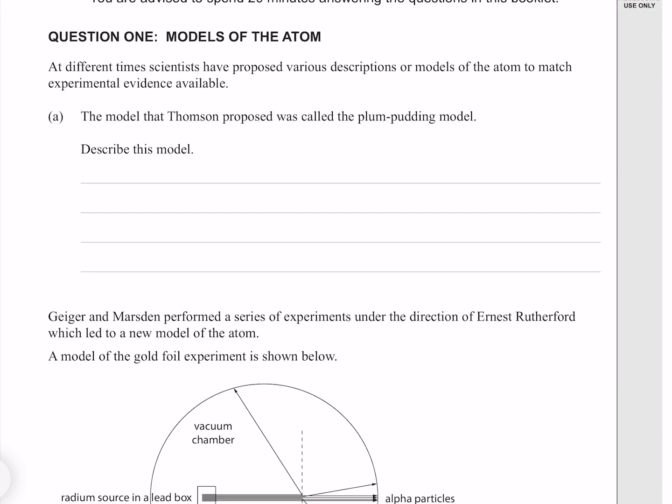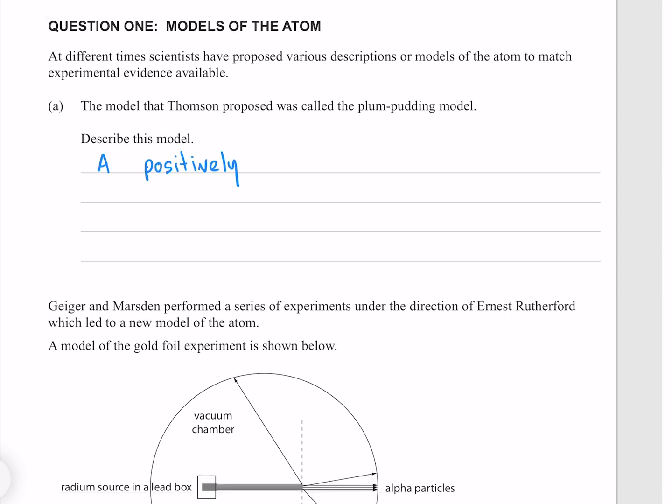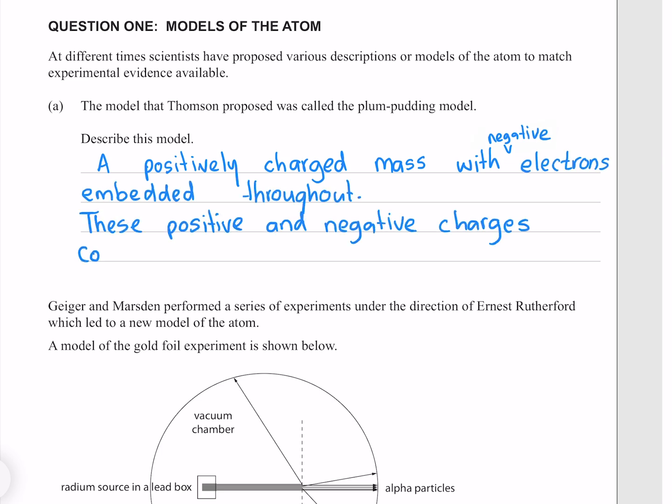Question 1. At different times, scientists have proposed various descriptions or models of the atom to match experimental evidence available. The model that Thomson proposed, called the plum pudding model, consisted of a positively charged mass with negative electrons embedded throughout. These positive and negative charges combine so that the atom is neutral overall.